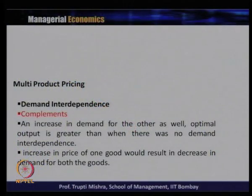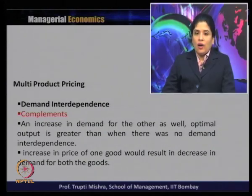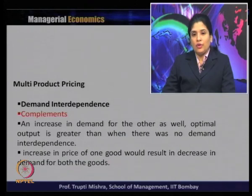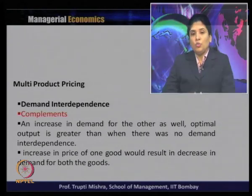In the case of complementary goods under demand interdependence, complementary goods are those where one good cannot be consumed without consuming the other. An increase in the demand for one leads to an increase in the demand for the other, and the optimal output is greater than when there is no demand interdependence. If the price of one good increases, the demand for that good decreases, which simultaneously leads to a decrease in demand for the other complementary good.